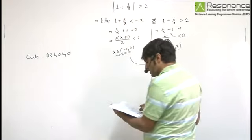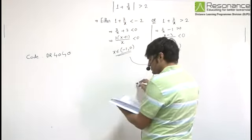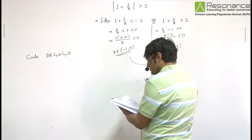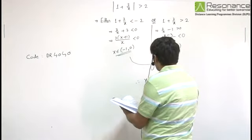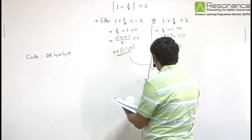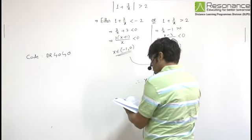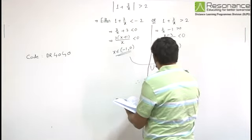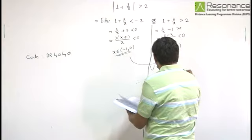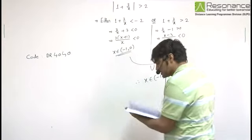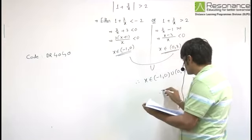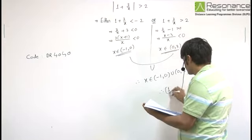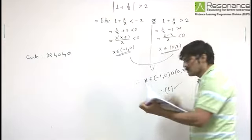So it will become x belongs to minus 1 to 0 union 0 to 3, that means the correct option is 1.